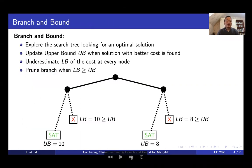Concretely, they have an upper bound representing the best solution found so far, and they compute a lower bound at every node of the search tree and prune a branch when the lower bound is bigger than the upper bound. However, this pruning of branches and backtracking are not explained.